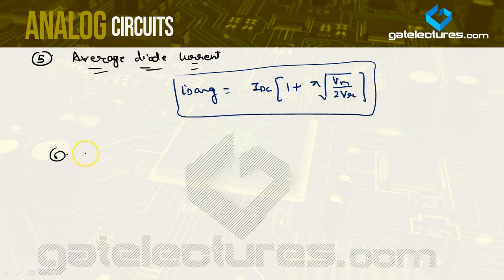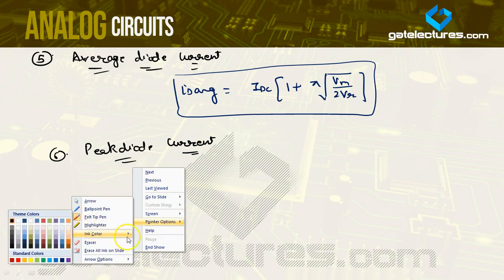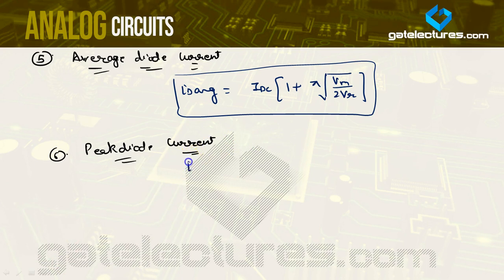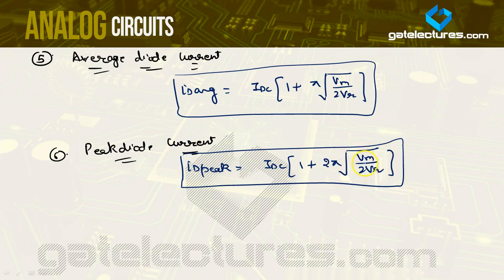The sixth point is peak diode current. Using the same derivation approach, ID_peak equals IDC into (1 plus 2pi times square root of Vm by 2Vr). Again there is a subtle difference from the half wave rectifier case: in half wave it is 2Vm by Vr, whereas here in the full wave case it is Vm by 2Vr.